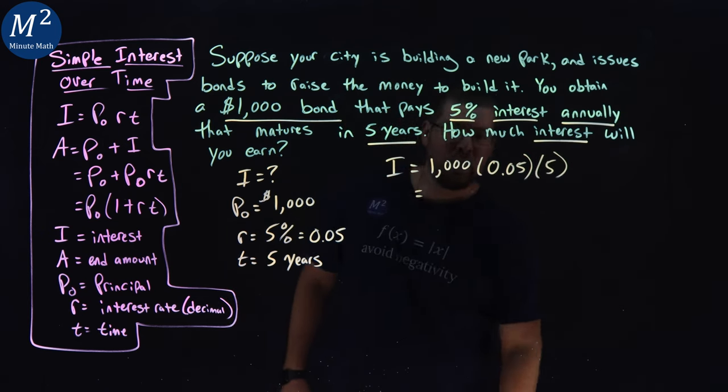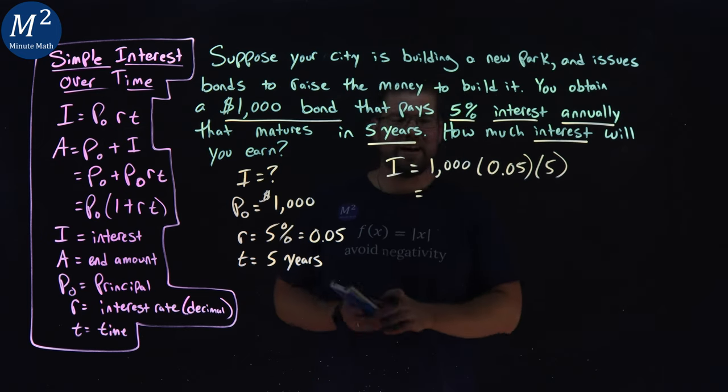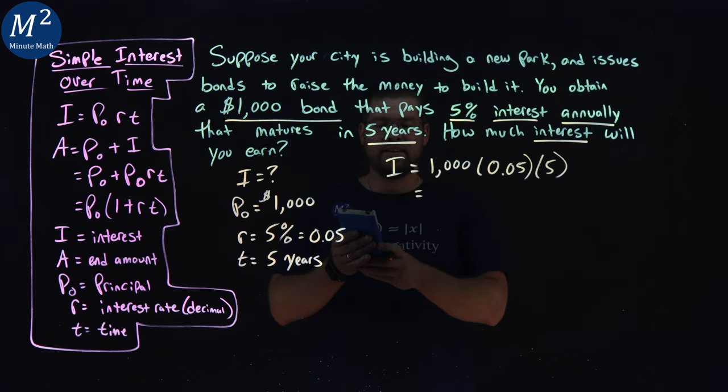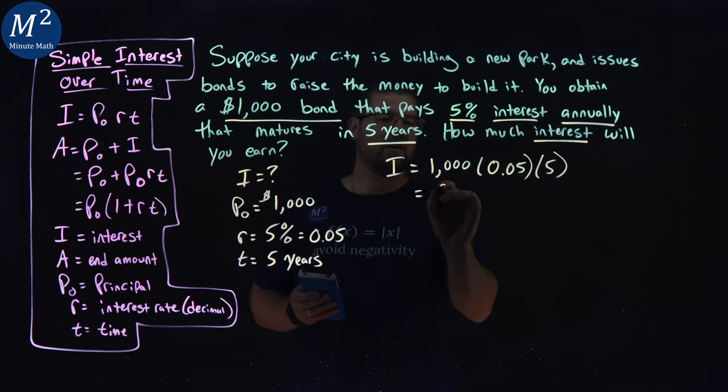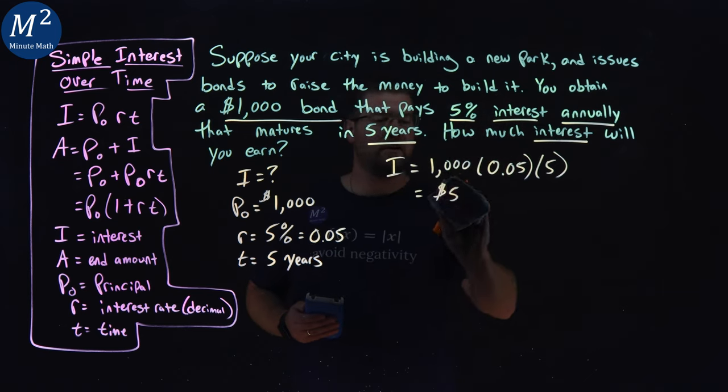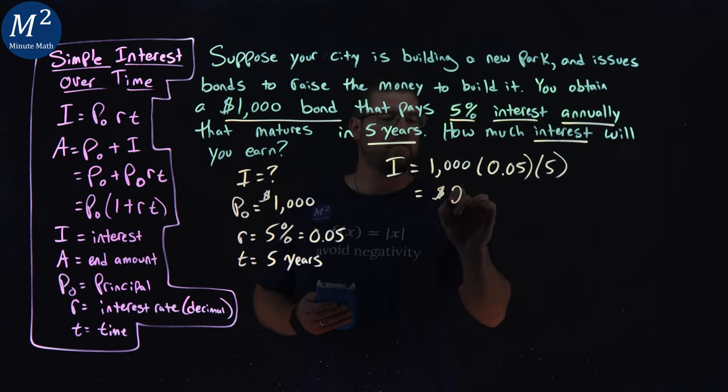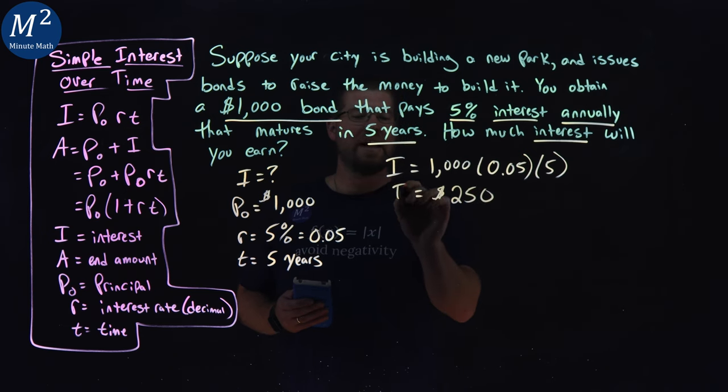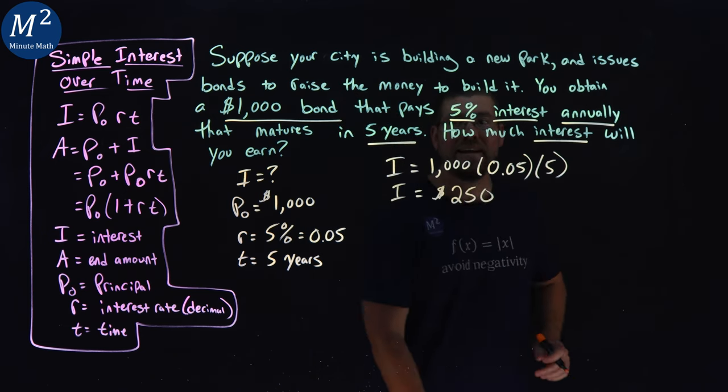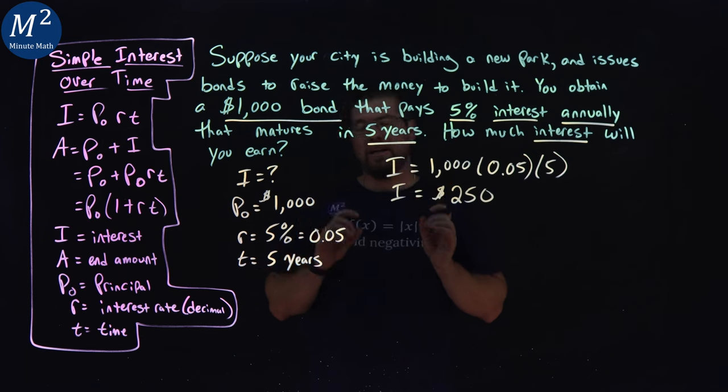So we want to multiply that out, and when we do, I'll double check. I believe it's $250. The $1,000 multiplied by 0.05 times five is $250. Oh, not five. $250 there. Sean, pay attention. $250 right here. And that is our interest. That's our interest amount.